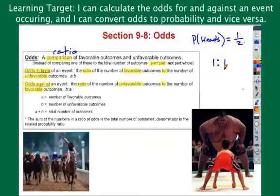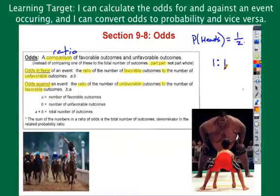Odds against is the number of ways it will not happen to the number of ways it will happen. Notice how closely this relates to probability, but it's close and not quite. Probability is the number of ways it could happen to the total number of possibilities. The total includes both things — it's the sum of everything that could happen, ways it could and ways it couldn't together.